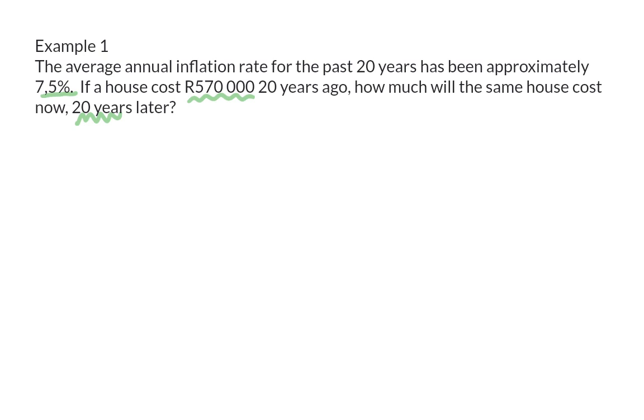The inflation rate is given, which will be our i, and we know that the house originally, the P-value, cost R570,000. We want to know how much this house will cost 20 years later. That means we need to calculate the A-value.